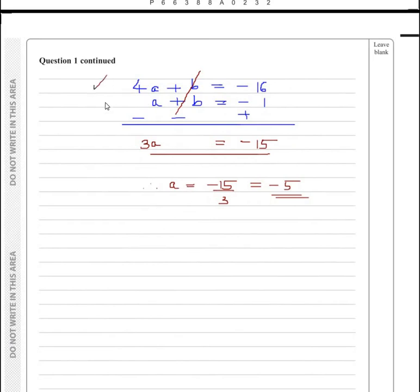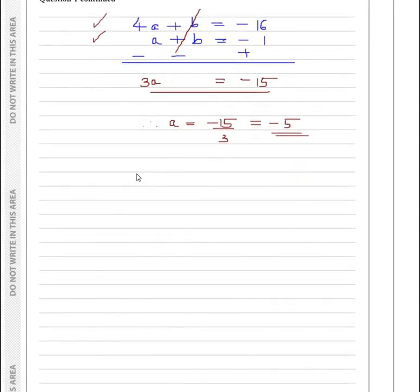Now you can use either equation to find the value of b. Since the second equation is much easier to use, I am going to use it. a + b = -1. a I got as -5, so -5 + b = -1. Therefore, b = -1 + 5 gives you 4. Hence, we have got the values of a and b. This is the answer for part b.